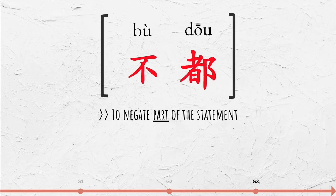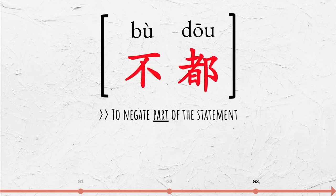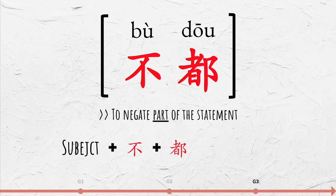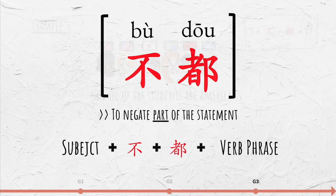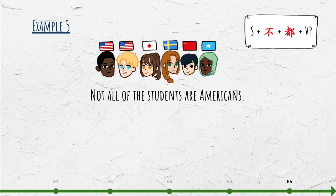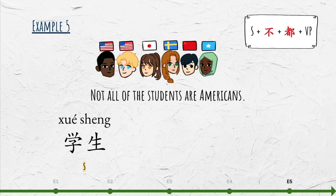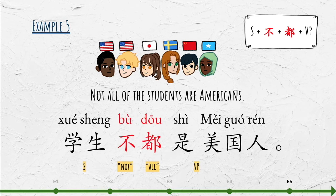To negate only part of the statement, place 不 before 都. The structure is: subject + 不 + 都 + verb phrase. For example, 'Not all of the students are Americans': 学生不都是美国人。